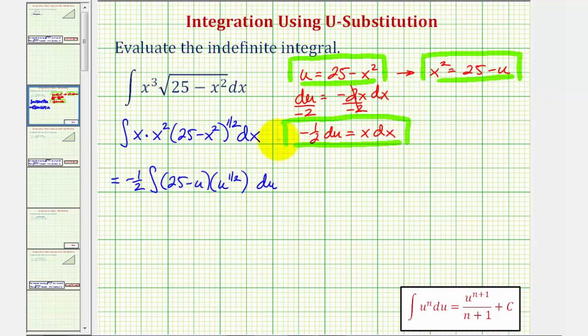Now let's go ahead and distribute. So we have negative one-half times the integral of, this would be 25 u to the one-half, and this is u to the first, so we have minus u to the three-halves.